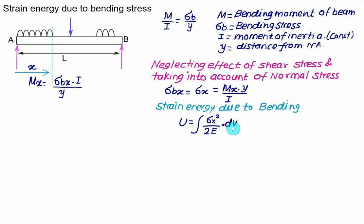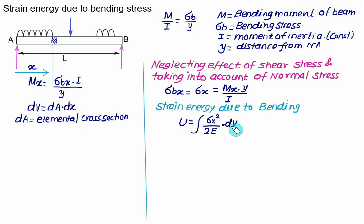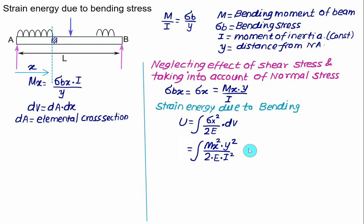The volume element dV can be written as dA multiplied by dx, where we consider a section of thickness dx with area dA. Substituting dV = dA·dx into the strain energy integral, we get the integral of σ_X² — which equals (M_X·Y/I)² — divided by 2E, with dV replaced by dA·dx. The term ∫Y²dA is a familiar one: it equals the moment of inertia I.